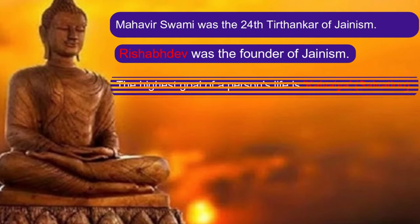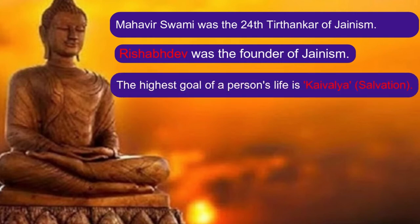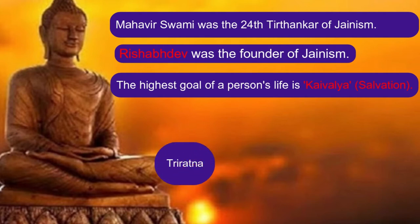But Mahavir Swami had revived the Jain dharma. According to Mahavir Swami, the highest goal of a person's life is Keval, or Salvation — which means freedom of the soul from the cycle of birth and death, or moksha. This Salvation can be attained by observing and practicing the 3 Ratnas. Let's see what the 3 Ratnas are.